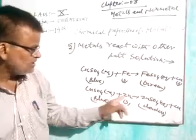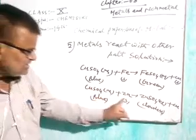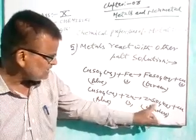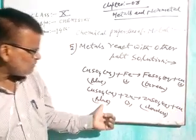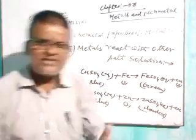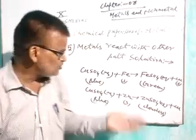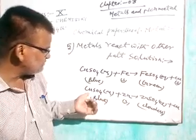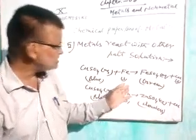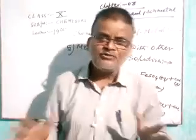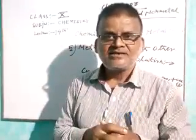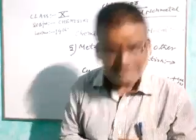When zinc metal is placed in an aqueous solution of copper sulfate, zinc is more reactive than copper, so zinc displaces copper from the copper sulfate solution, forming zinc sulfate and copper. The blue color of the copper sulfate solution disappears and becomes colorless. So we can say that more reactive metal displaces the less reactive metal from its salt solution. This chemical property also represents a displacement reaction. That concludes today's video class for class 10th. Thank you. Goodbye.